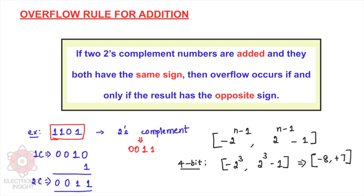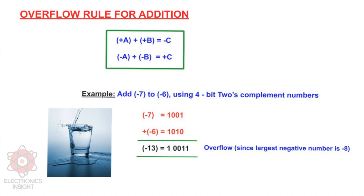If the result of an arithmetic operation is too large — either positive or negative — to fit into the resultant bit range, then arithmetic overflow occurs. That is the general rule for any overflow. You can see a picture here of a glass of water being overfilled — the water exceeding the glass's capacity is analogous to arithmetic overflow whenever a result is too large to be accommodated.